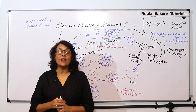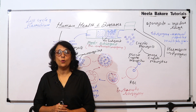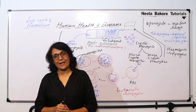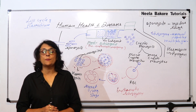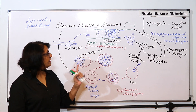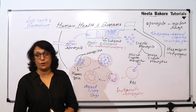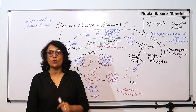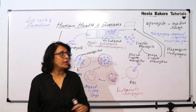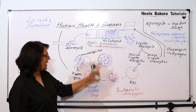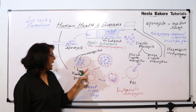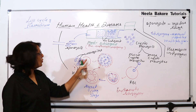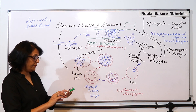In this part we'll continue with the life cycle of Plasmodium. In the previous part we studied the schizogony part — that is, asexual reproduction of Plasmodium in liver and RBC — and as a result of this schizogony, merozoites are released.